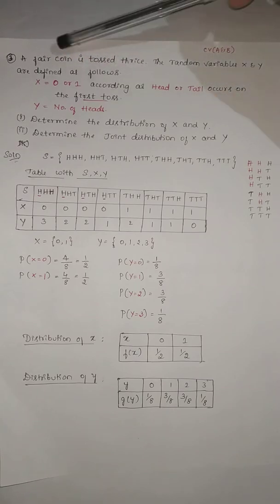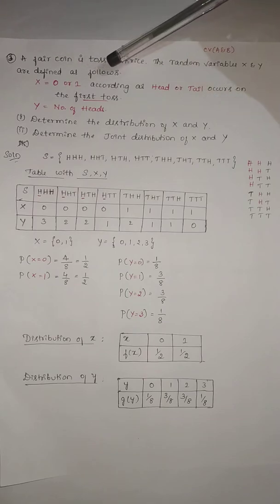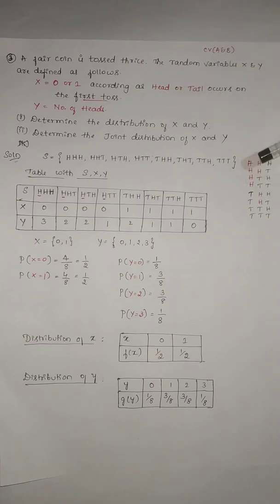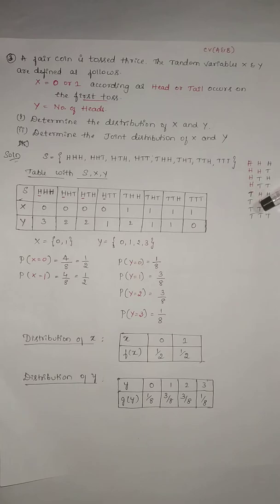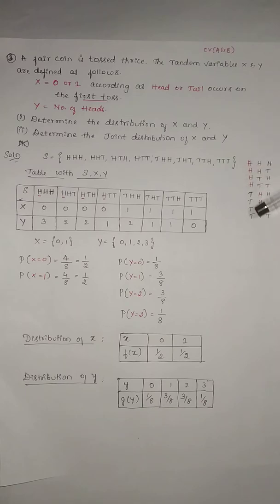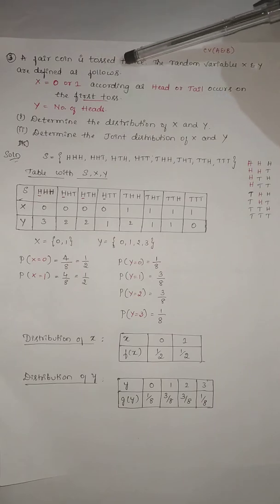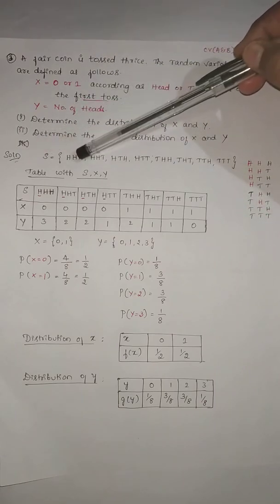When a coin is tossed thrice, you need to write the sample space. In the first column: 4 times H, 4 times T. In the second column: 2 times H, 2 times T, and again 2 times H, 2 times T. In the third column: 1 time H, 1 time T, 1 time H, 1 time T. So there are 8 possibilities when you toss a coin thrice.